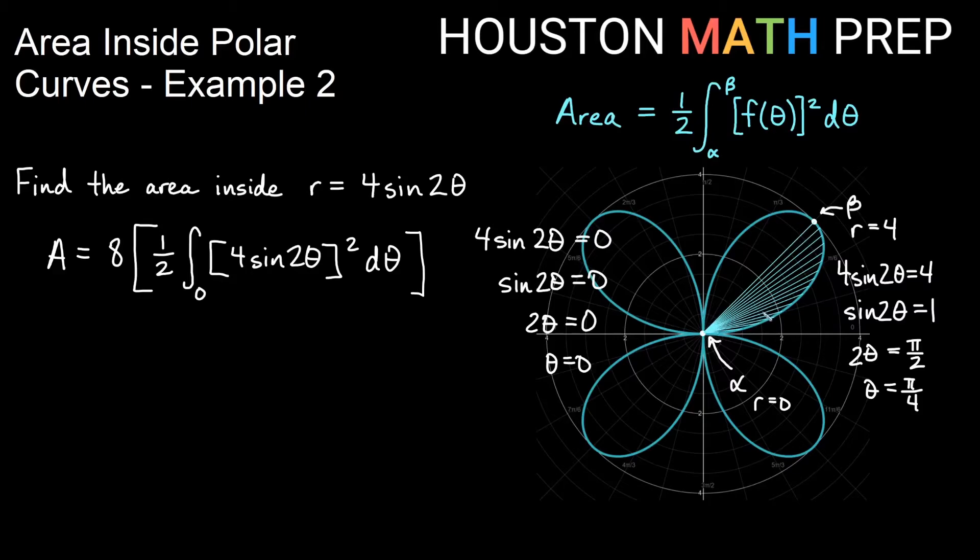These can be deceiving sometimes in polar. You think it's pi over four and maybe it's not. So it's always best to check and actually solve for these things. We will have integral from zero to pi over four.